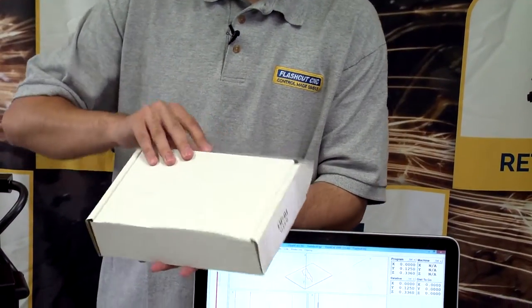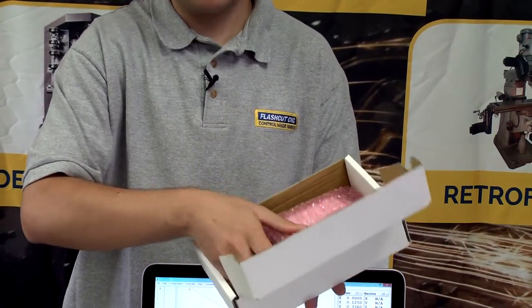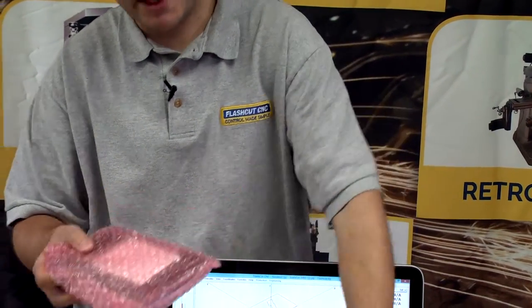When you first receive it, it will come in this box. You'll find the USB extension cable and inside the bubble wrap the pendant, stickers and the protective layering.